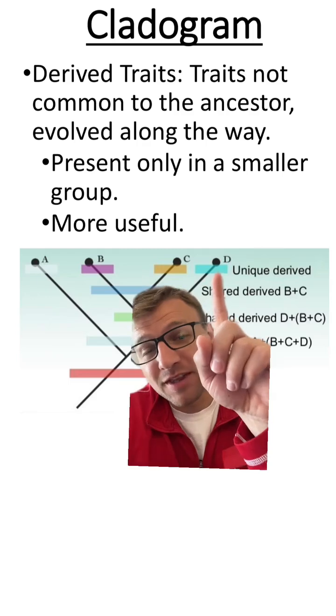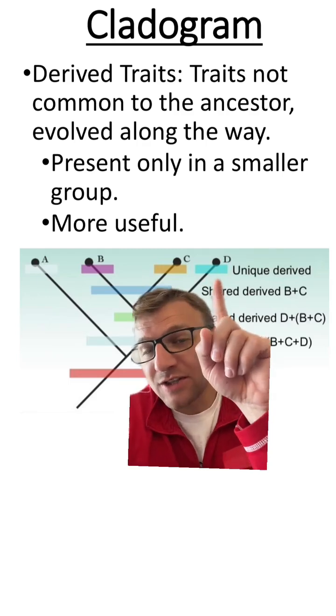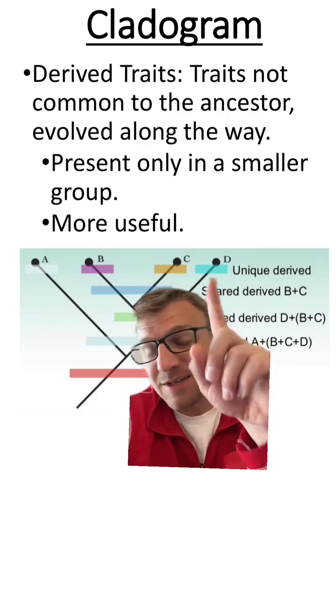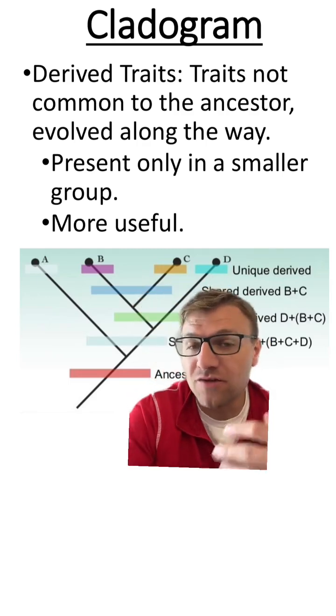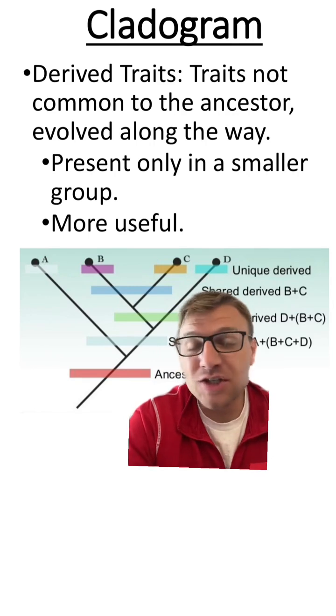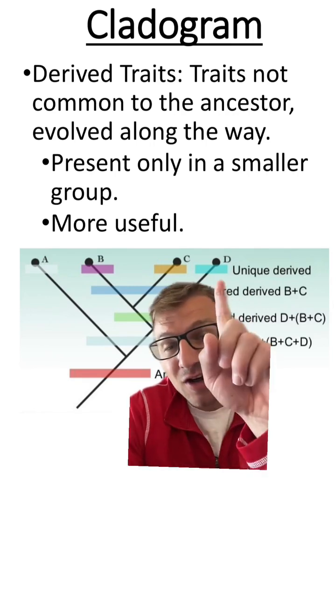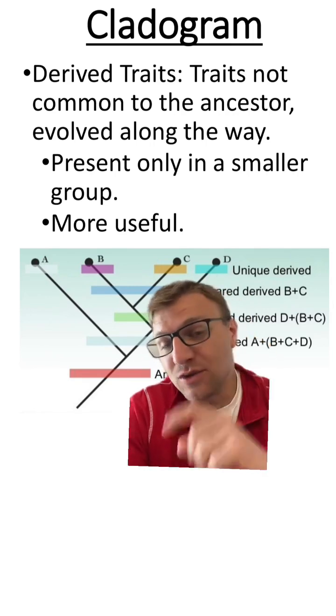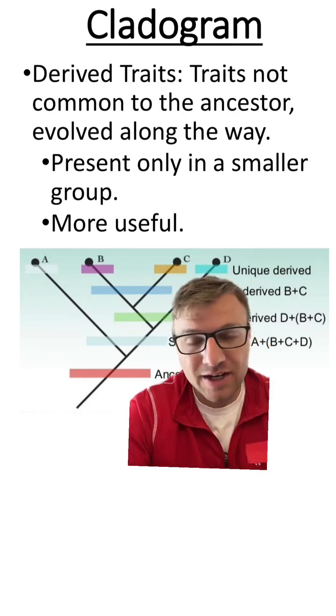For example, this blue trait is unique to D because it evolved on that lineage. So species A, B, and C are not going to have this unique derived trait.